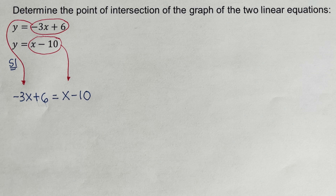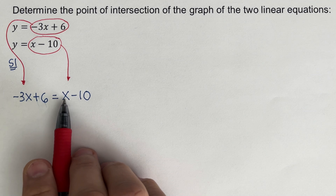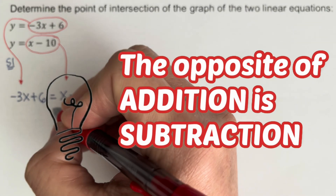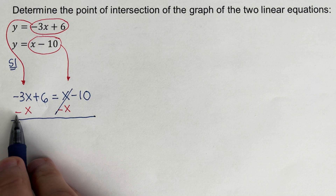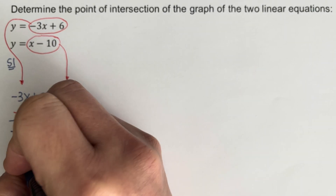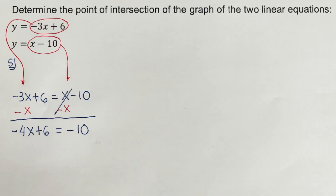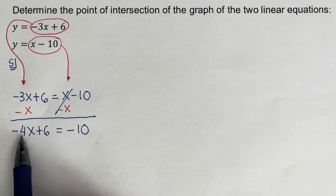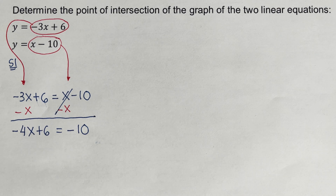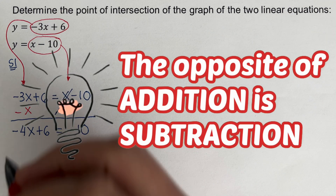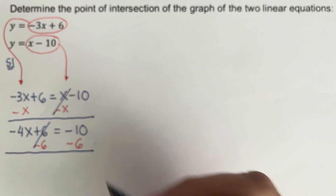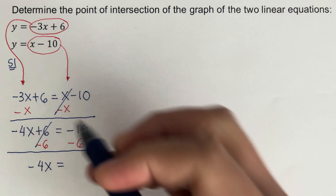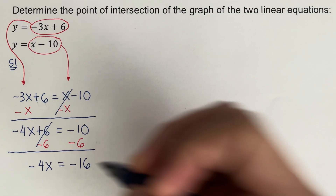We have x on both sides, so we need to get it to one side. Since this is a positive x, the opposite of addition is subtraction, so I subtract x from both sides. That gives negative 3x minus x, which is negative 4x, plus 6 equals negative 10. Then I subtract 6 from both sides, so negative 4x equals negative 10 minus 6, which is negative 16.